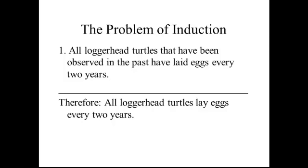Because no one has yet observed what loggerhead turtles will do in the future, an empiricist faces an epistemic problem. What reason do we have to think that unobserved loggerhead turtles will act in the future in the same way as observed loggerhead turtles have acted in the past?